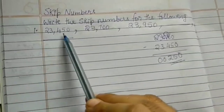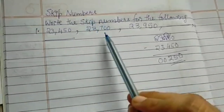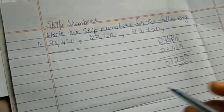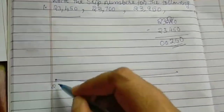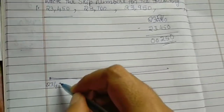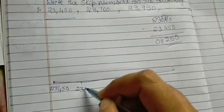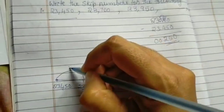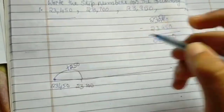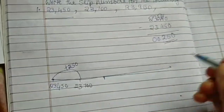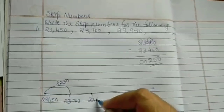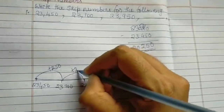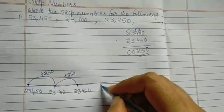So we understand that 250 is added to 23,450 to get the next number, 23,700. I'll show you the number line — first one is 23,450, second one is 23,700. Here 250 is added to get the number. Next will be 23,950, as it is already given. Same here — 250 is added.